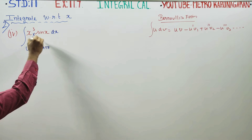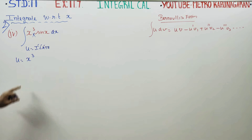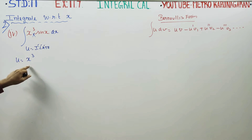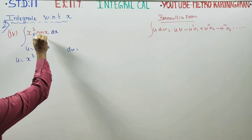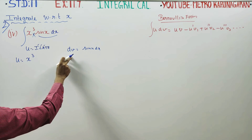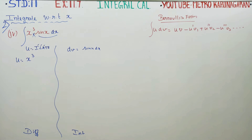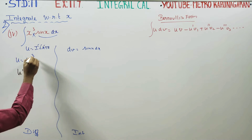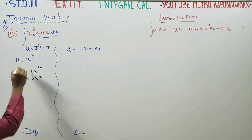iLATE stands for Inverse, Log, Algebra, Trigonometry, Exponential. Algebra comes before trigonometry, so u is equal to x cubed. We are using dv along the way. u dash is equal to 3 times x to the power 3 minus 1, which is 3x squared — that is the differentiation.